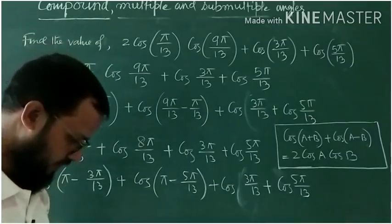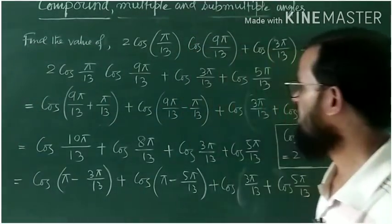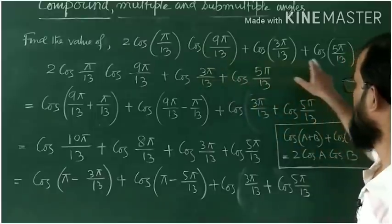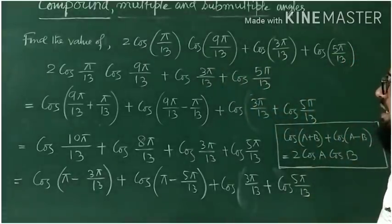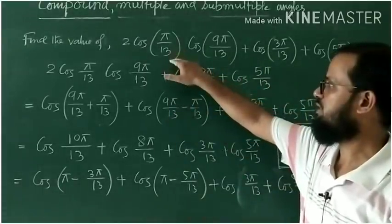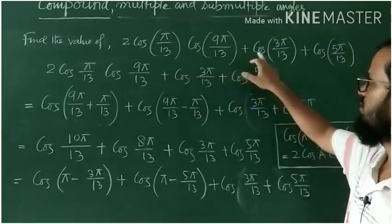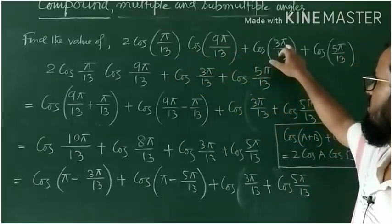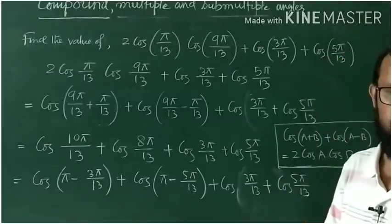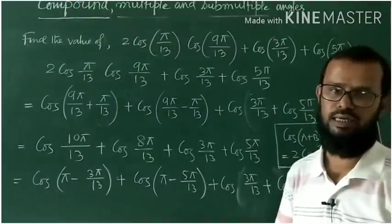So the first question is: find the value of this particular expression. What do we need to find? 2cos(π/13) · cos(9π/13) + cos(3π/13) + cos(5π/13). Find its value.